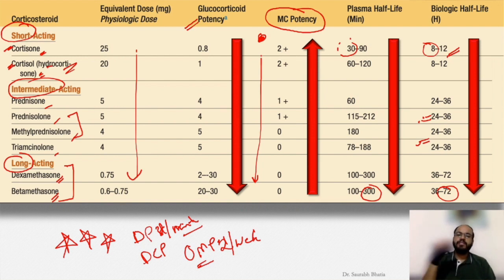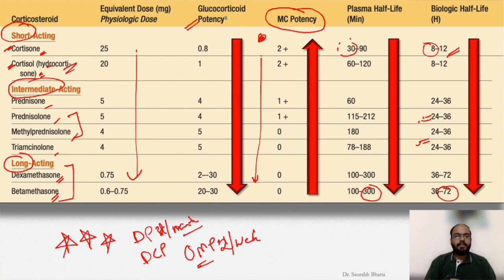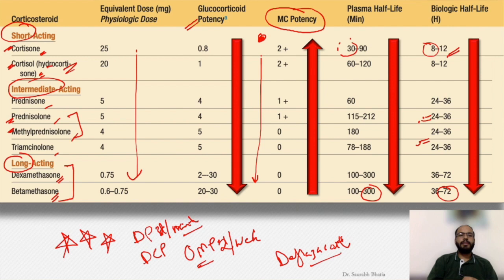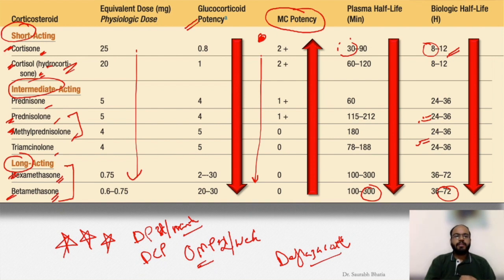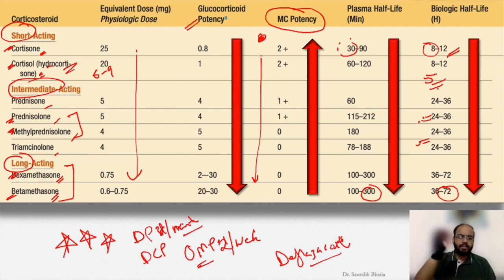Conversion rates between steroids are best learned by repeatedly seeing patients in OPD. Additionally, deflazacort is another steroid used in restricted conditions — the physiological dose is about 6–9 mg and the biological half-life is roughly 5 hours. My personal drug of choice is prednisolone or methylprednisolone for routine use, and betamethasone in oral mini-pulse (OMP) or dexamethasone pulse regimens.